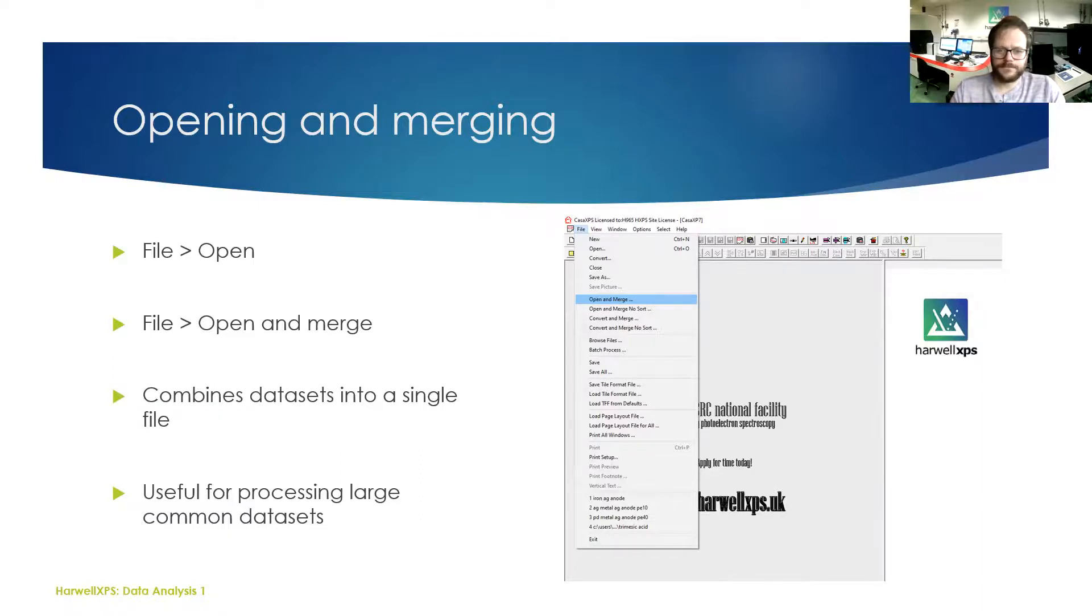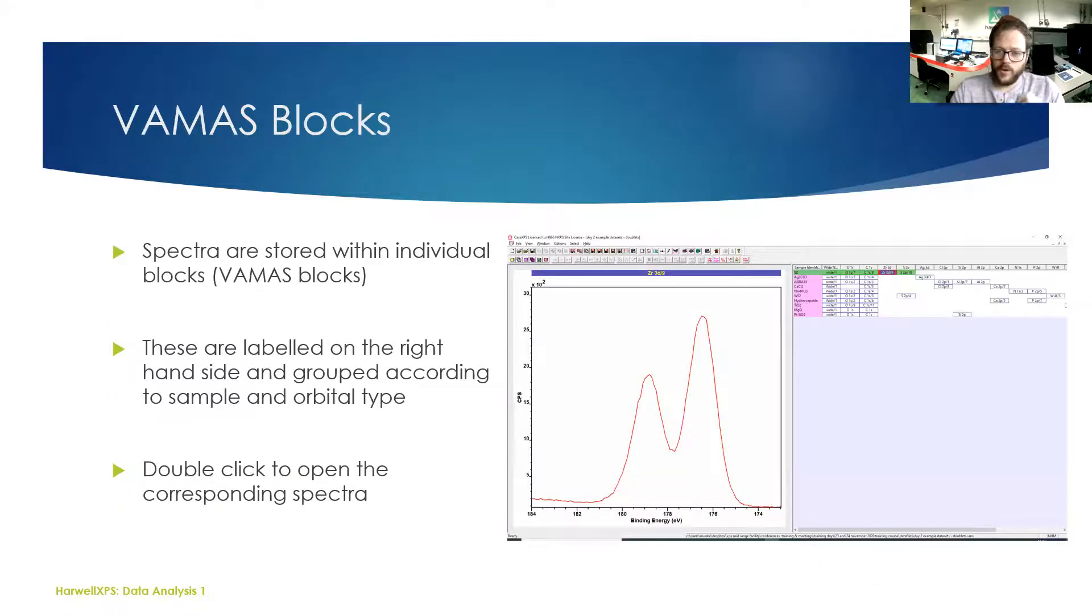A quick word on VAMAS blocks. You will probably hear this term used throughout this course. On the right-hand side here, we've got lots of different rectangles which have got the elements and orbitals inside. Selected here we've got zirconium 3d for the sample SZ. Double-click on any of these blocks and that will open up the corresponding spectra in the main window. Those are what the VAMAS blocks are and they contain all of the information about your spectra.